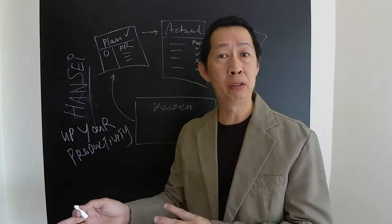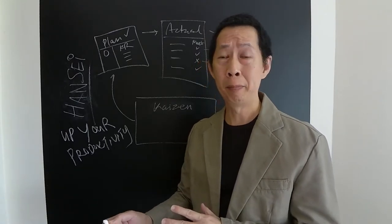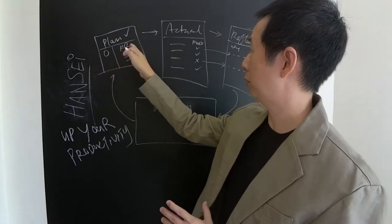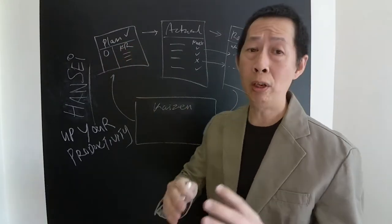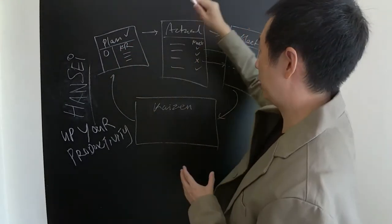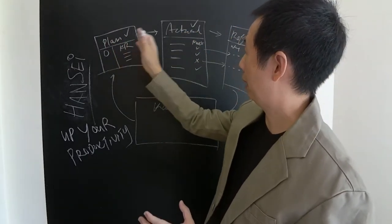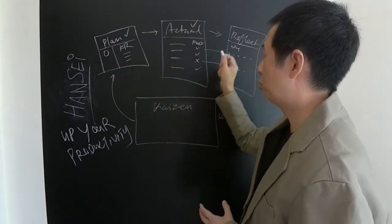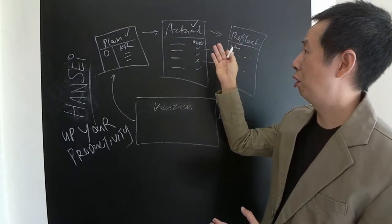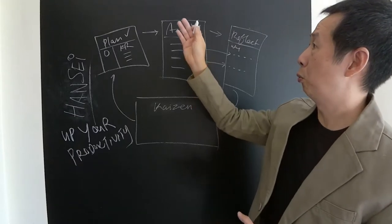OKR stands for Objectives and Key Results. Once you have that, the next phase is to measure — compare what you planned versus your actual results, to see whether you met your plan or not.